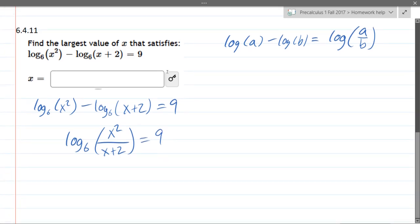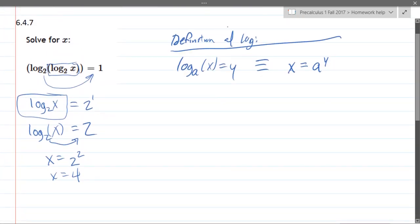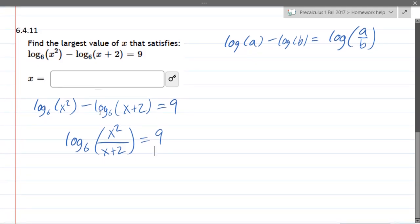So we have log base 6 of x squared divided by x plus 2 equals 9. We want to solve for x, so we want to get rid of x's friends. This is all inside the parentheses, so we're going to deal with this last. But we can get rid of this. How do we do it? We're going to use the definition of a log. Probably the most important thing to remember is the definition of a log. We're going to move the base to the other side as a base.